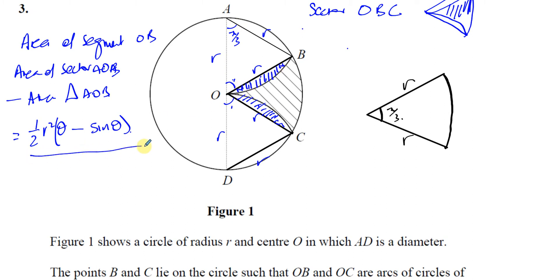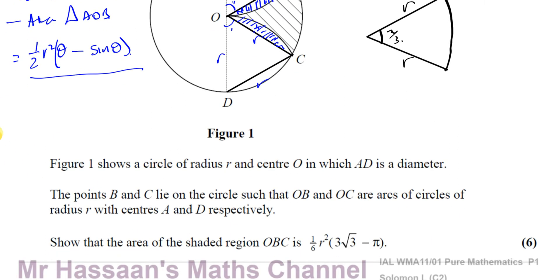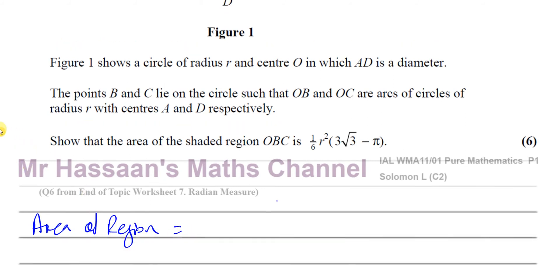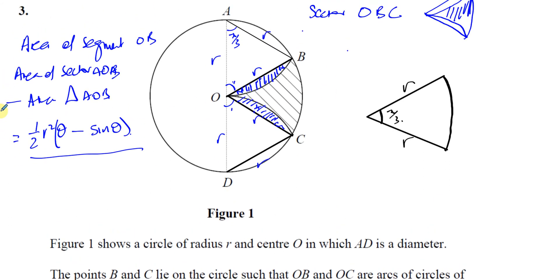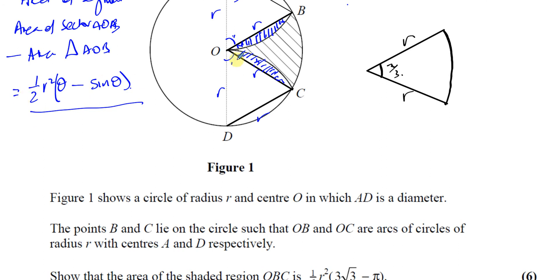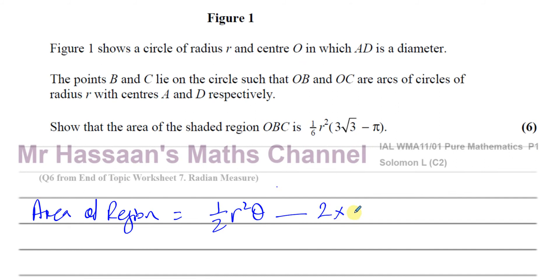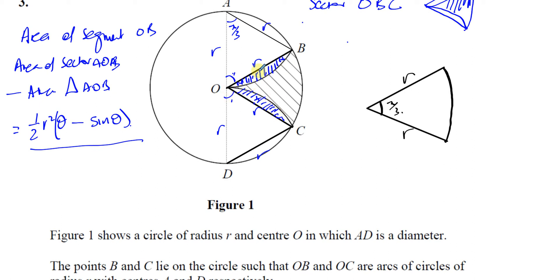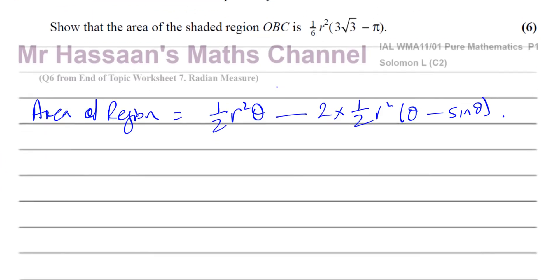The area of the required region equals the area of sector OBC minus the area of two segments. So it's (1/2)R²θ minus 2 × [(1/2)R²(θ − sin θ)]. That gives us the area we need: the sector OBC with two segments removed from it.